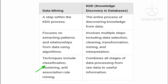The third difference is that data mining techniques include classification, clustering, and association rule mining — it uses specific techniques like classification, clustering, and association. But in KDD, it combines all the stages of data processing from raw data to useful information, involving all the steps from cleaning the data, mining it, and understanding the results to make better decisions.